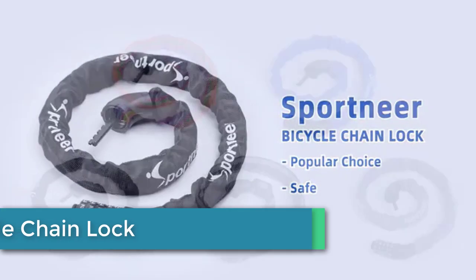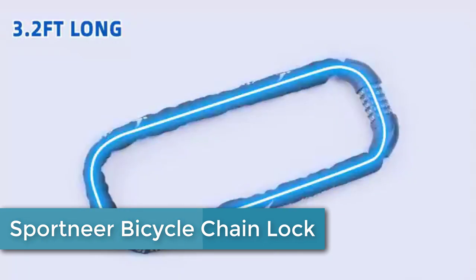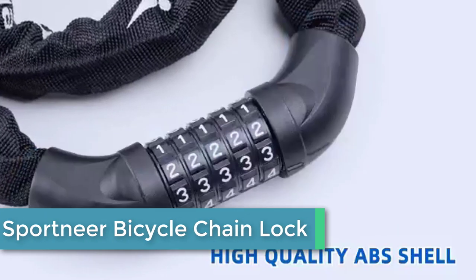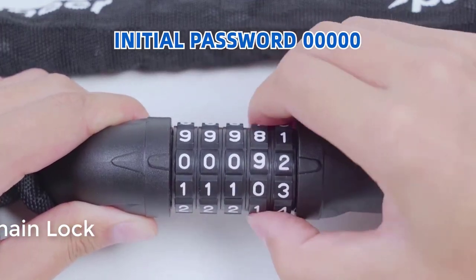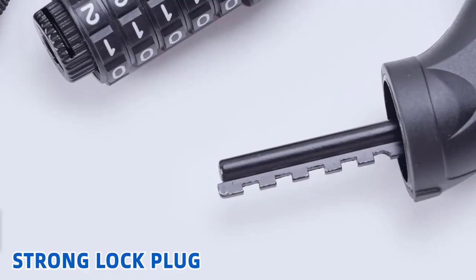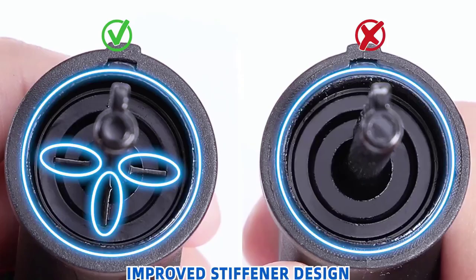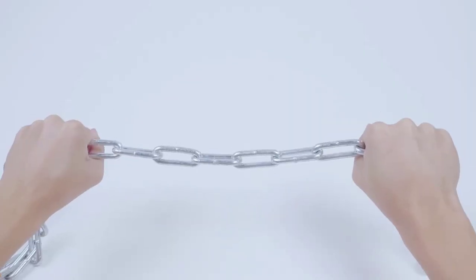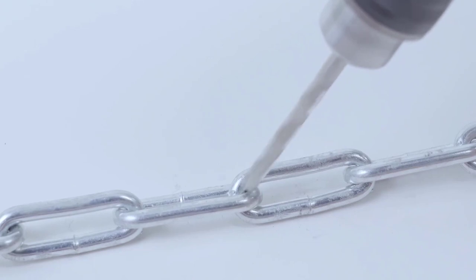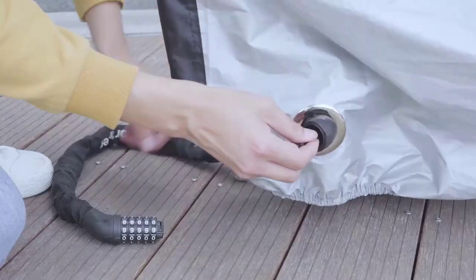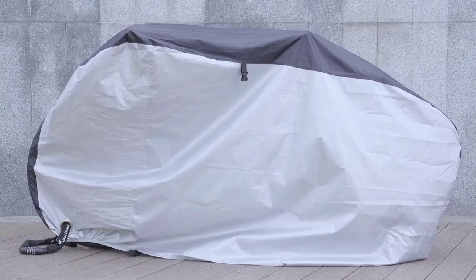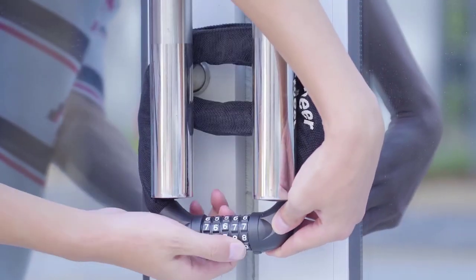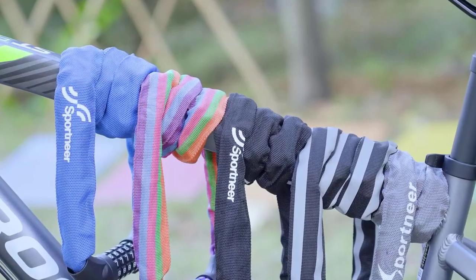At number 2, we have the Sportneer Bicycle Chain Lock. This heavy-duty anti-theft lock features a 5-digit resettable combination lock, making it keyless and convenient to use. Its 0.27-inch thick manganese steel chain is covered by a protective cloth sleeve to prevent scratches and damage to your bike. This lock is versatile and can be used to secure bikes, scooters, doors, gates, fences, and more.